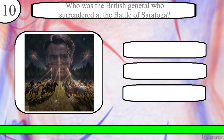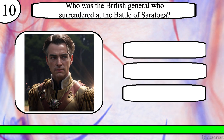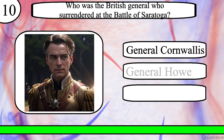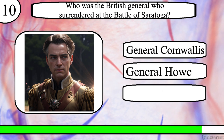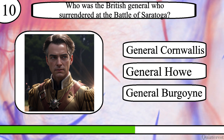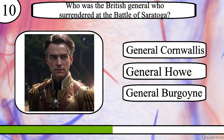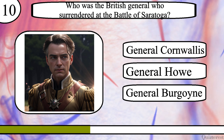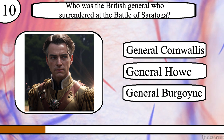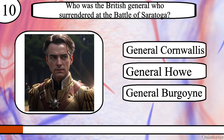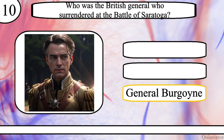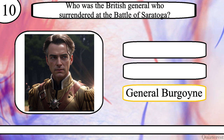Question 10. Who was the British general who surrendered at the Battle of Saratoga? General Cornwallis, General Howe, or General Burgoyne? The correct answer is General Burgoyne.